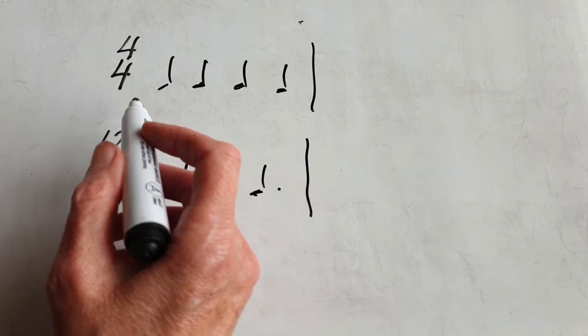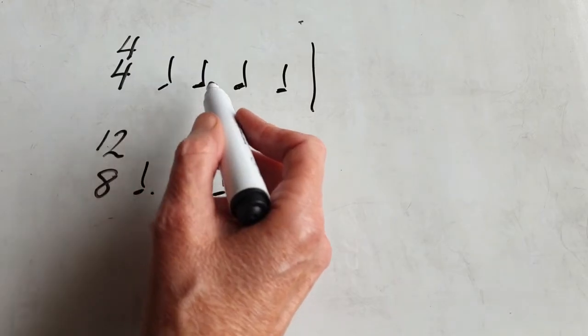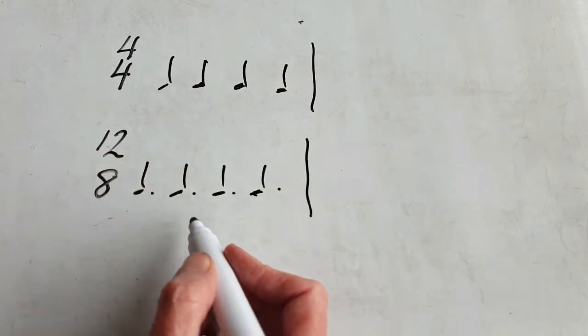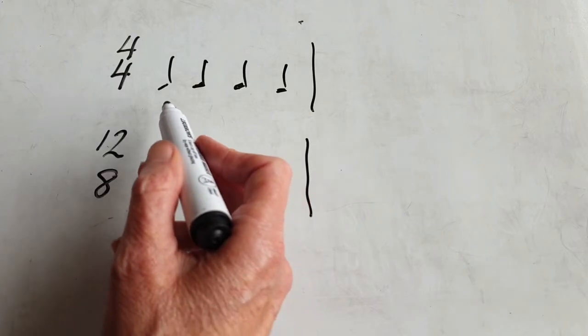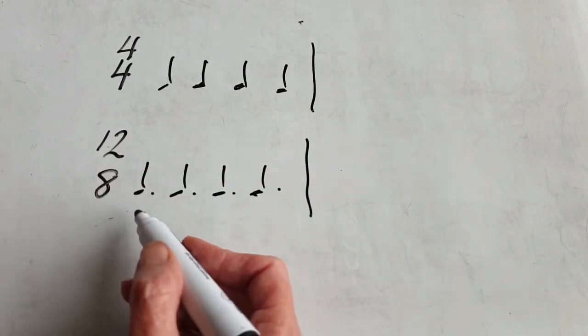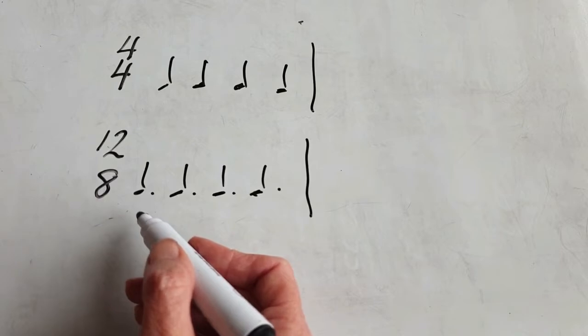This is the difference between 4-4 and 12-8. Four beats in a bar for both. In 4-4, each beat is worth one crotchet or quarter note. In 12-8, each beat is worth one dotted crotchet or one dotted quarter note.